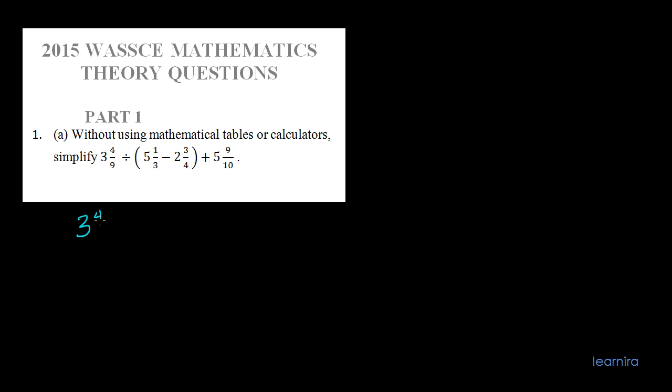This is the first question from the WAEC 2015 mathematics theory paper. Without using mathematical tables or calculators, simplify this expression. It's like WAEC likes giving this type of question for the first question — you can check the WAEC 2014 mathematics theory question, it's almost in the same fashion. The expression is: 3 and 4/9 divided by 5 and 1/3, minus 2 and 3/4, then plus 5 and 9/10.